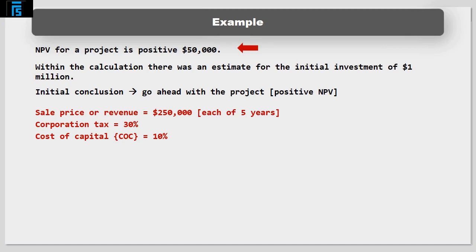Let's now consider the sensitivity of our decision to sales price. The net present value of the cash flows affected by sales price is as follows. $250,000 before tax is worth $250,000 times 1 minus 30% equals $175,000 after tax each year for 5 years at a discount rate of 10%.